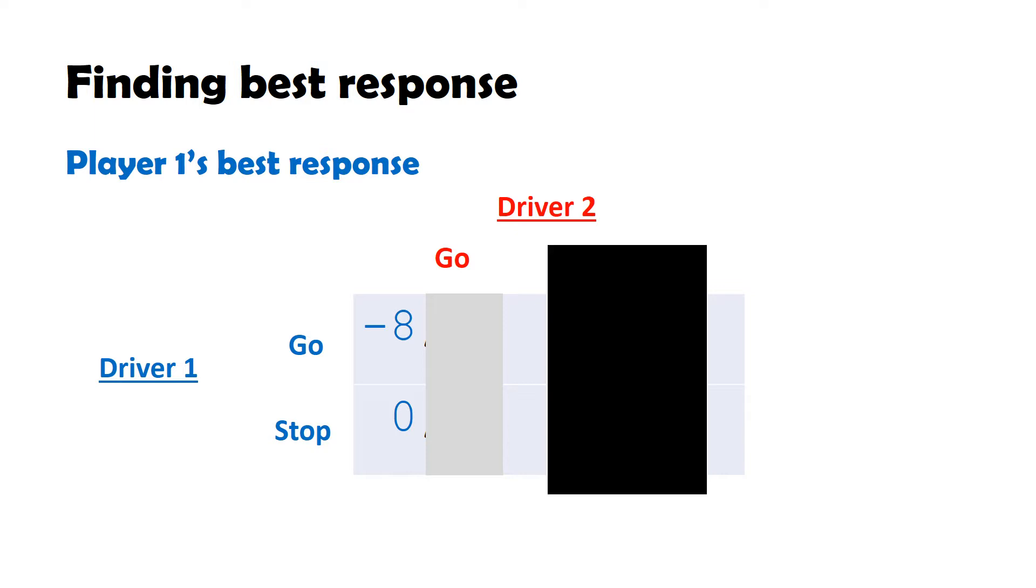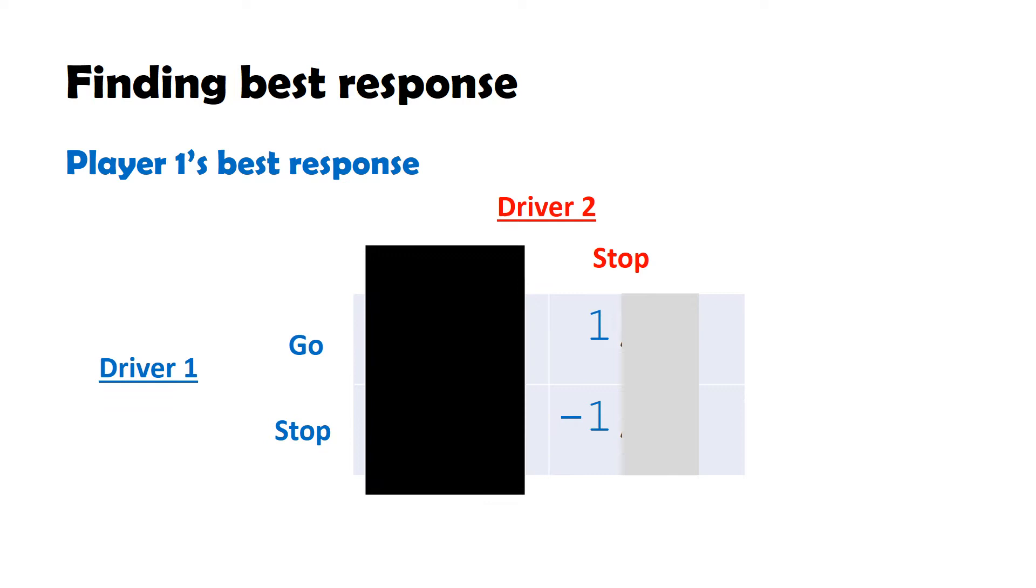Looking at driver one, if driver two were to go, she would be best off stopping, since zero is greater than minus eight. And if driver two were to stop, then she'd gain more utility by going.